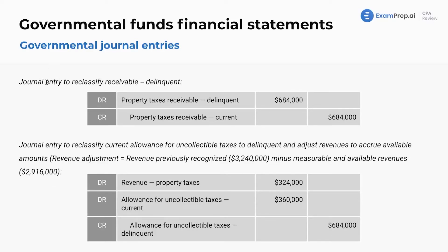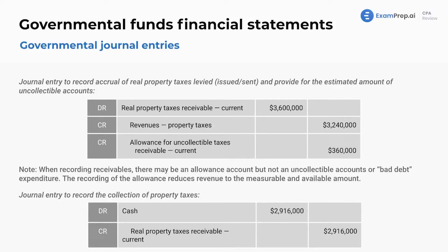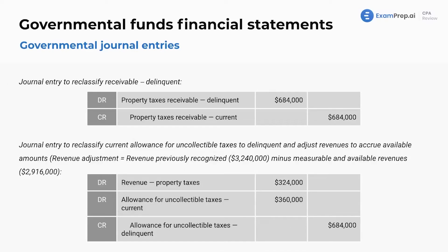This is the journal entry to reclassify receivables — so this is delinquent. When people don't pay their taxes, we debit property tax receivable delinquent and credit property taxes receivable current. This is an additional $684,000 that's not paid — that's where this is coming from. The difference here is the extra money not being received by the government.